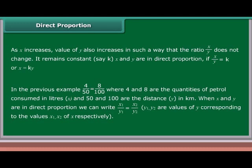When x and y are in direct proportion, we can write x1/y1 = x2/y2, where y1 and y2 are values of y corresponding to the values x1 and x2 of x respectively.